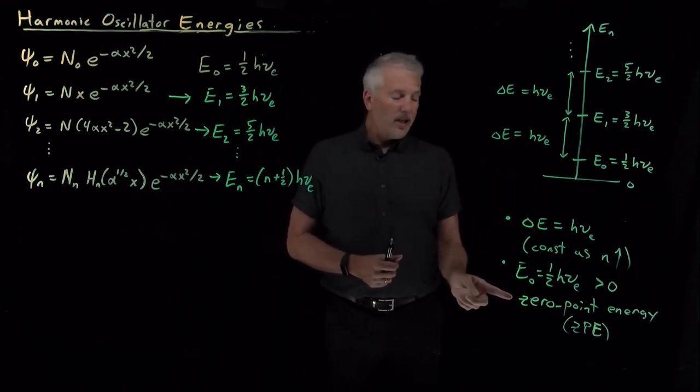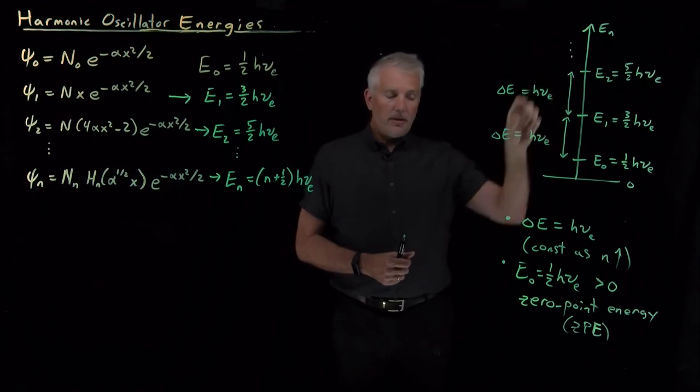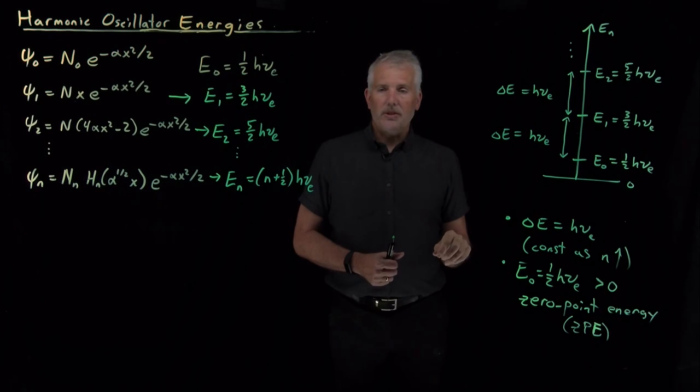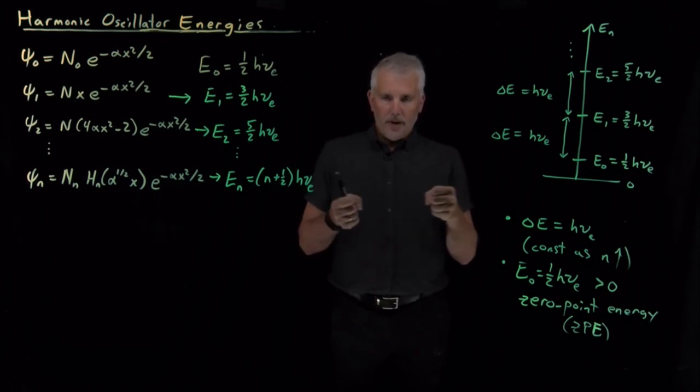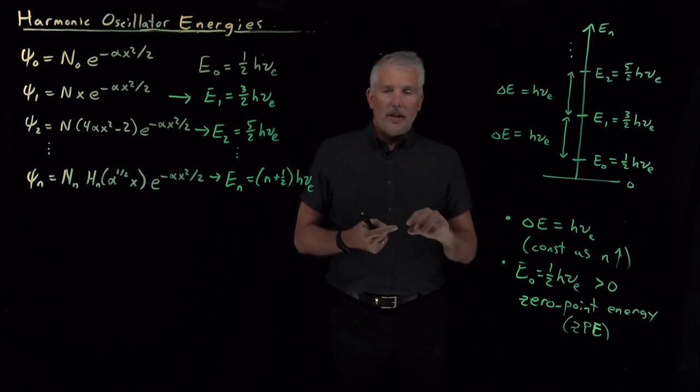So those two features, the fact that our harmonic oscillator has a zero-point energy, and the fact that the gaps between these energy levels remains constant as I climb the ladder, those will combine to have some pretty important consequences when we describe the properties of a harmonic oscillator, the properties of a diatomic molecule vibrating and acting as a harmonic oscillator. In particular, that will affect their spectroscopy.